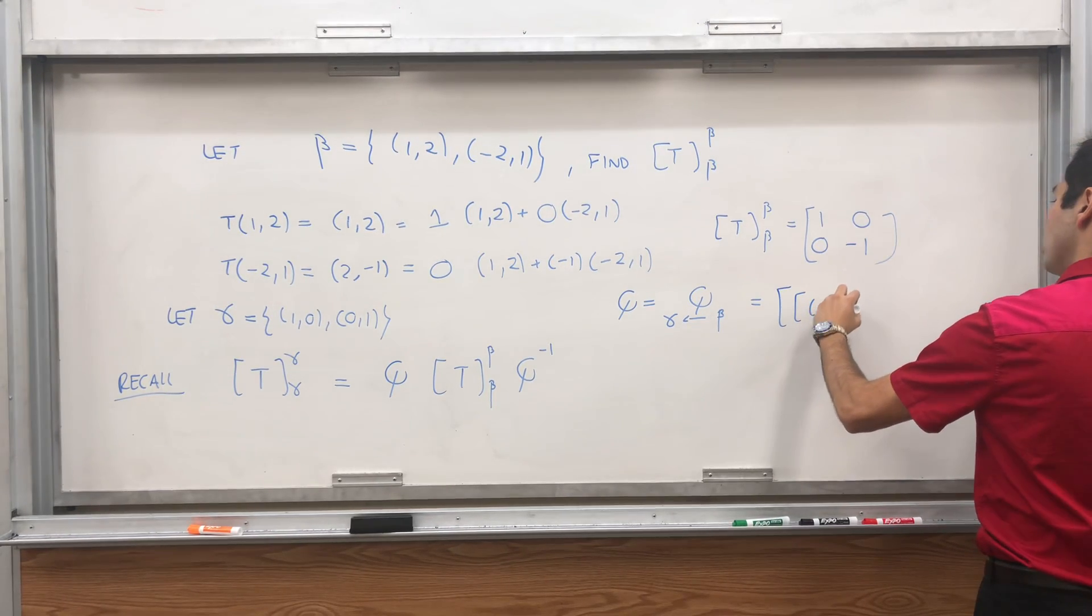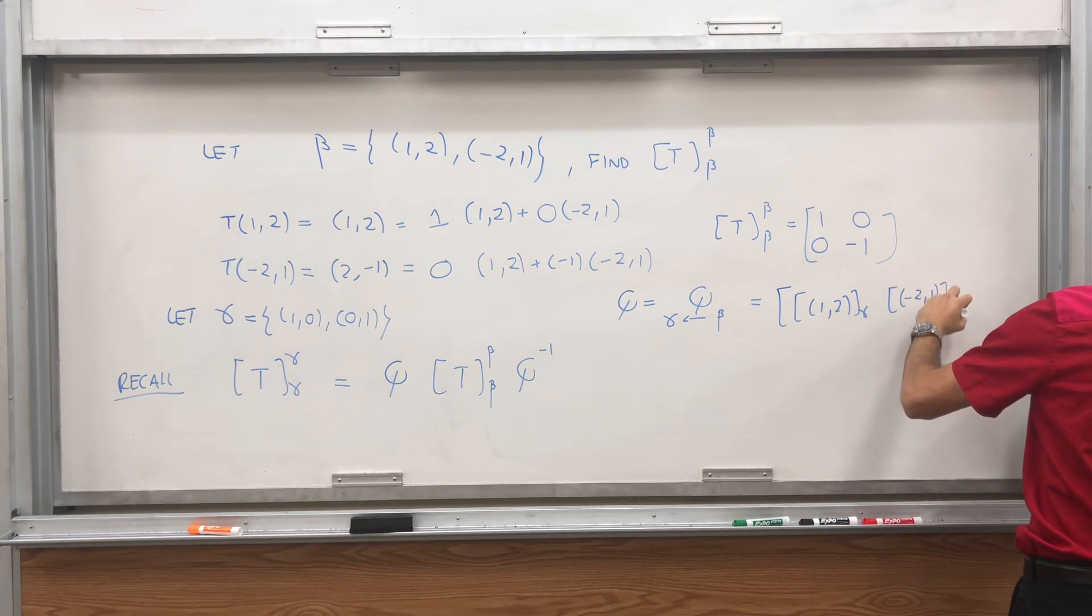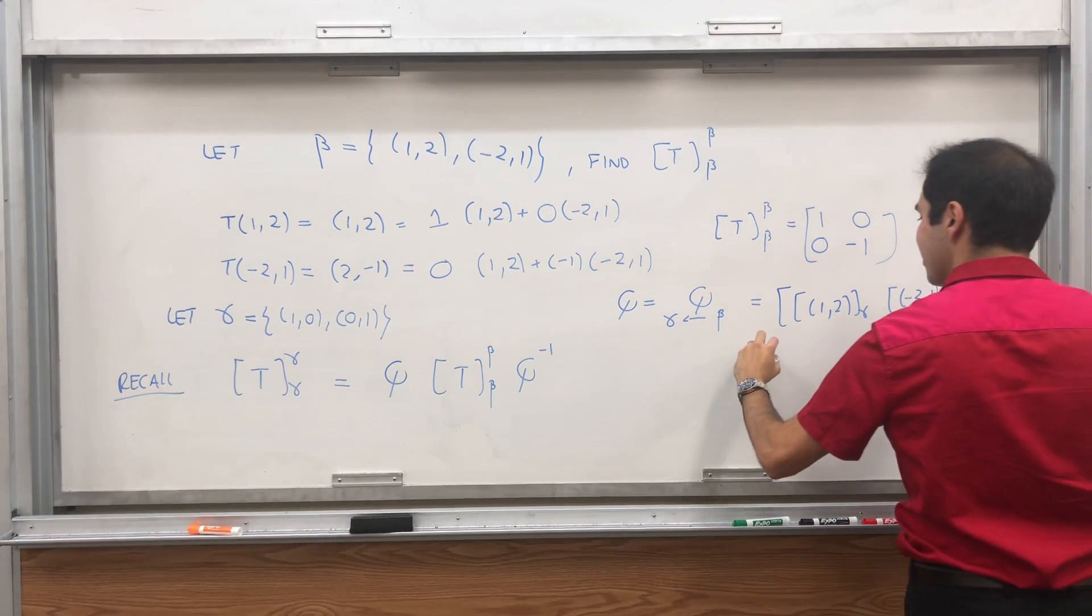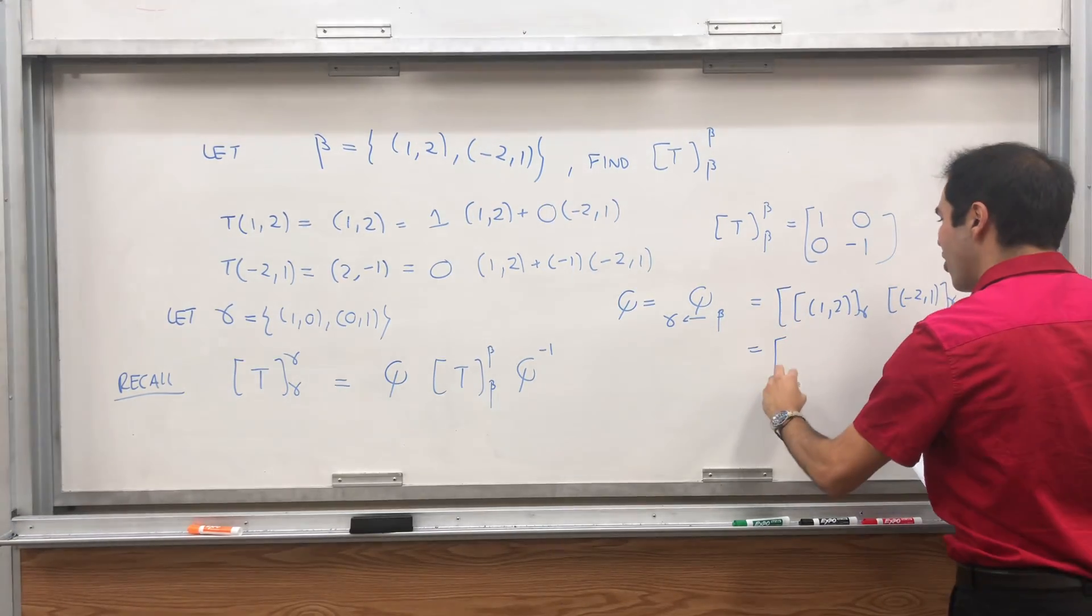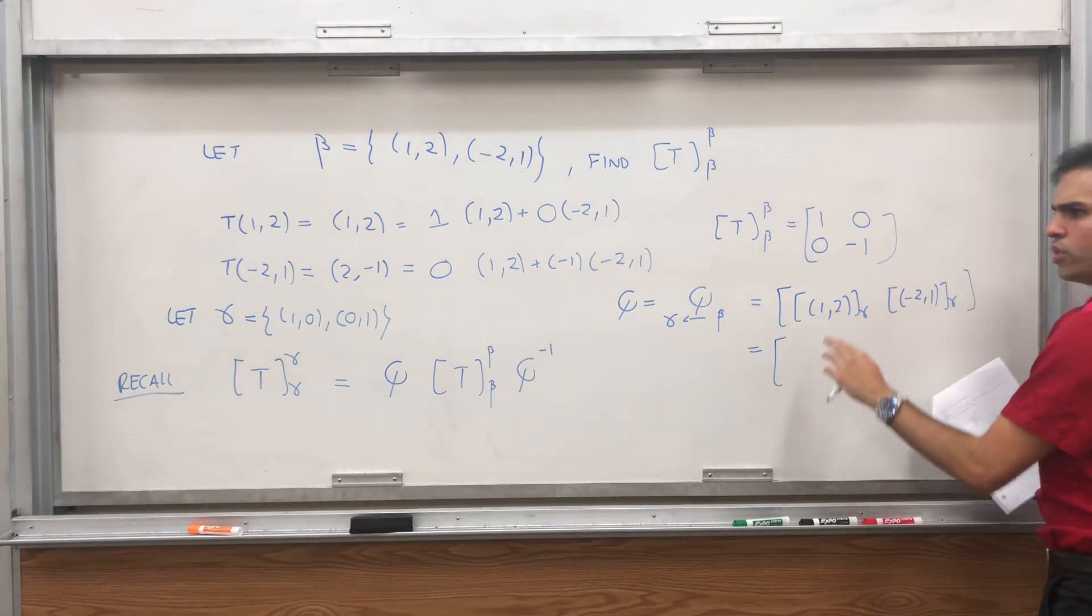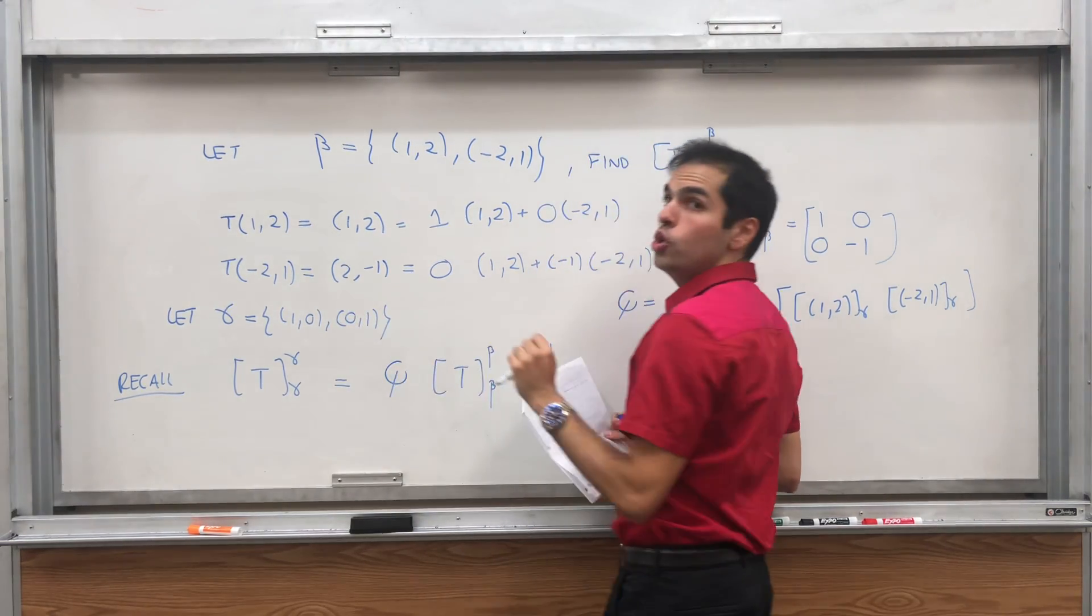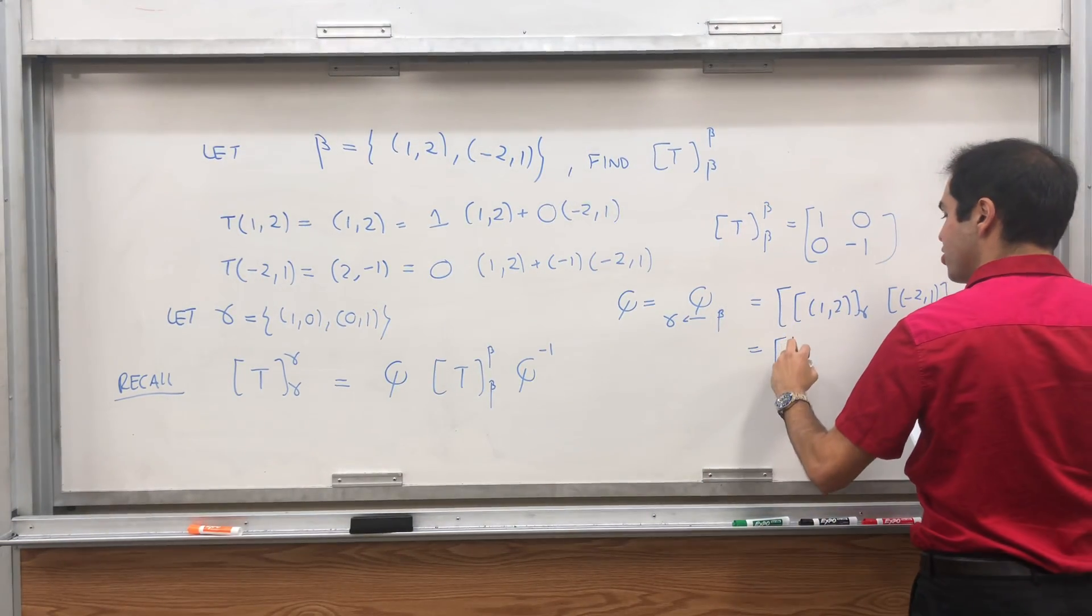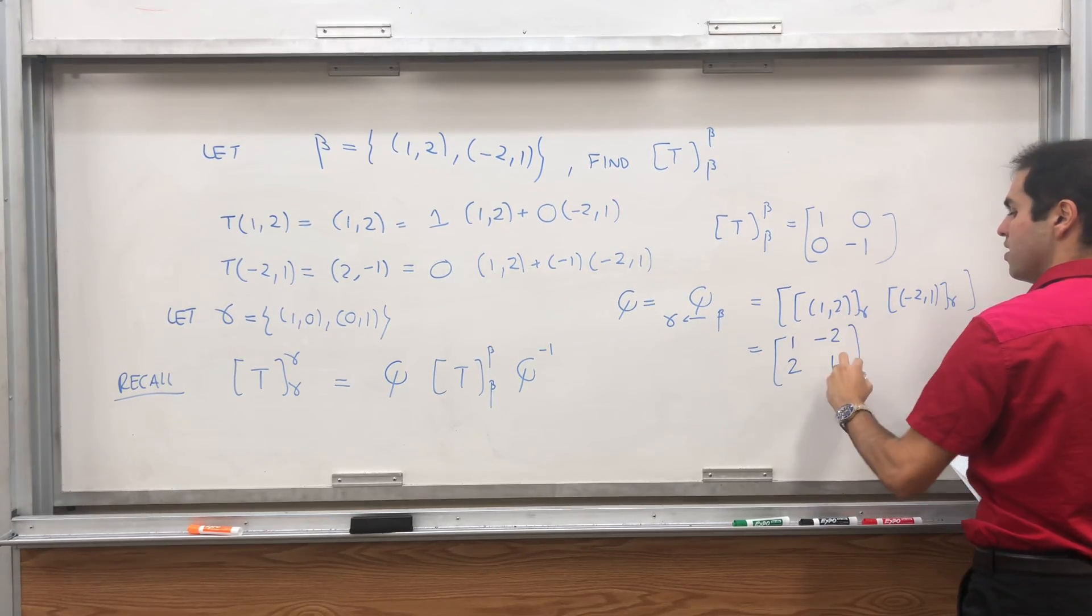So suppose we change our axes back. So suppose our new axes here are the x and y axes. So let gamma equals (1,0) and (0,1) just be the standard basis of R². Then, technically, what we have to do, we have to figure out what T is, and then find a new matrix of T. But the nice thing is we don't have to, because now we have this change of coordinates formula.